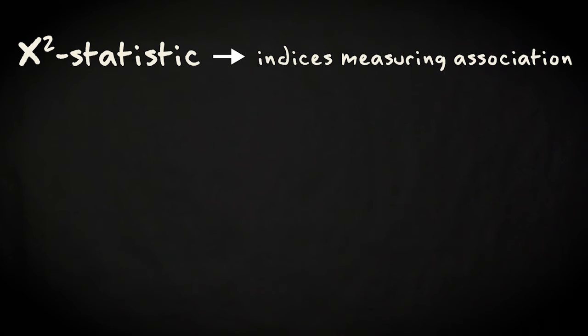Let me summarize what I explained in this video. You can express the strength between the categories in a contingency table with indices that are based on the chi-squared statistic.